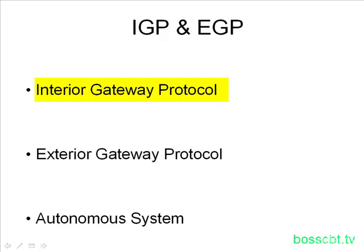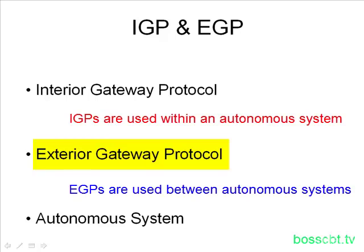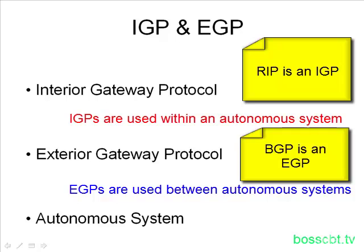An IGP, which stands for Interior Gateway Protocol, is a protocol that's used within an autonomous system. An EGP, or Exterior Gateway Protocol, is a protocol that's used outside or between autonomous systems. An example of an IGP is RIP, which we just learned about. An example of an EGP would be BGP, the Border Gateway Protocol.